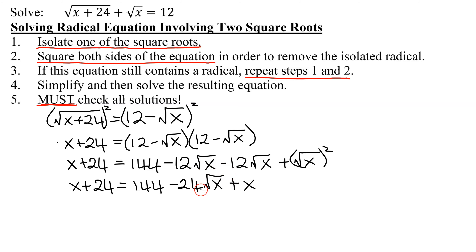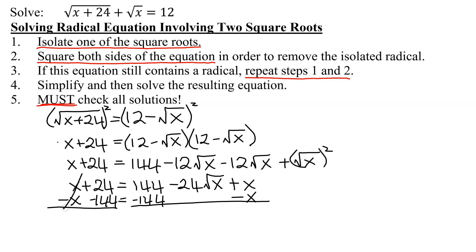Step 1 says isolate the square root that I have left. So I'm going to subtract 144 from both sides, and I'm also going to subtract x from both sides. So x minus x is 0, and 24 minus 144 is negative 120, equals negative 24 times the square root of x, and x minus x is 0. To isolate my square root of x, I'm going to have to divide both sides by negative 24. I'm running out of room, so I'm going to go on to the next slide.